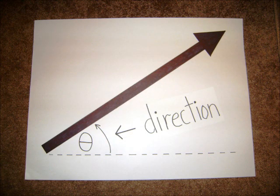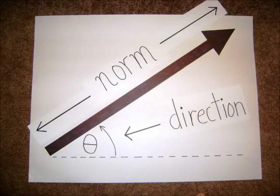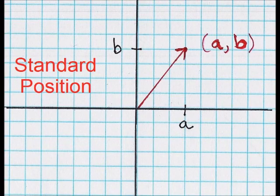A vector is a directed line segment. Use an arrow to show the way it went. Its length is called its norm. Standard positions when it's drawn.